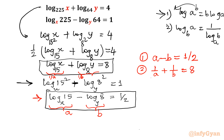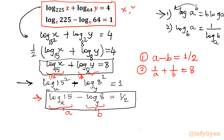We have two equations and two unknowns to find. One important note: since the system involves logarithms, x and y must both be positive — this is a necessary condition, as the argument of a logarithm cannot be negative.